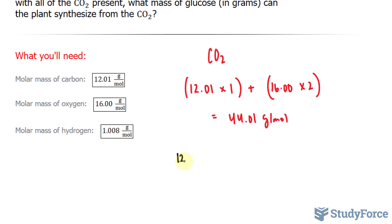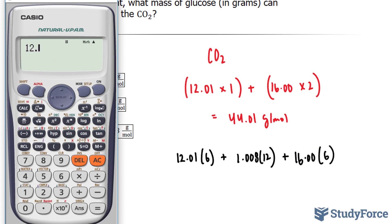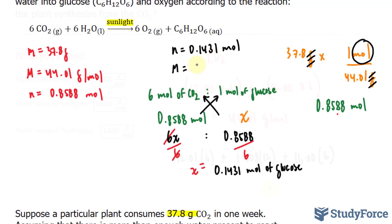So 12.01 times 6, plus 1.008 times 12, 12 hydrogens, and 6 oxygens. Using our calculator, multiplying this by 6, plus 1.008 by 12, plus 16.00 by 6, and this gives me 180.156 grams per mole.